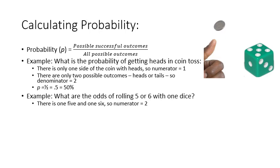What are the odds of rolling five or six with one dice? Well, there is one five and one six, so there are two possible successful outcomes, and there are six possible outcomes, one, two, three, four, five, six, so the denominator is six. So we calculate the probability two divided by six is one divided by three, is 0.33 is 33%, so the odds of rolling a five or a six with one dice are 33%, one in three.